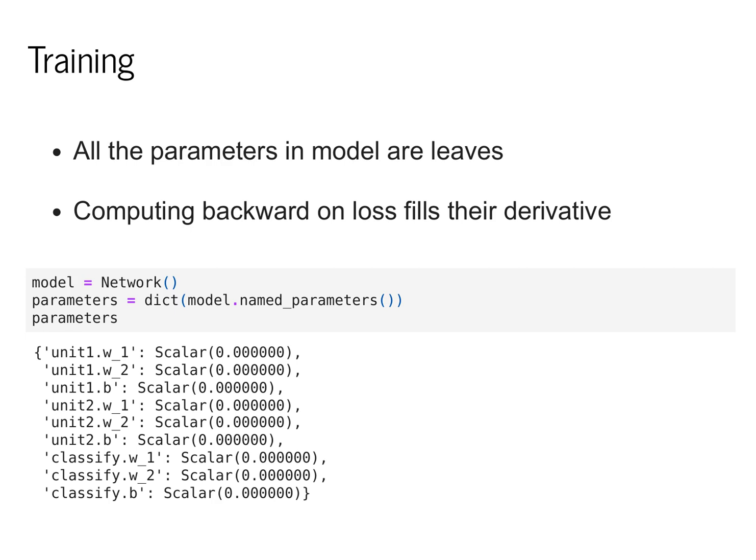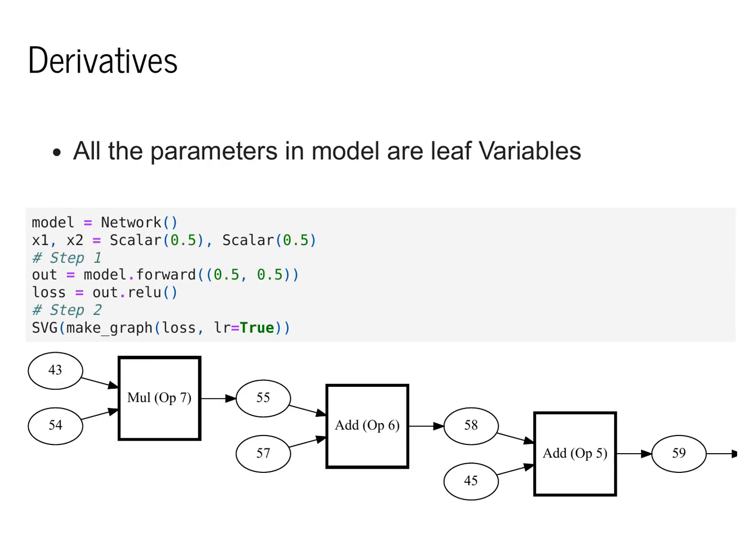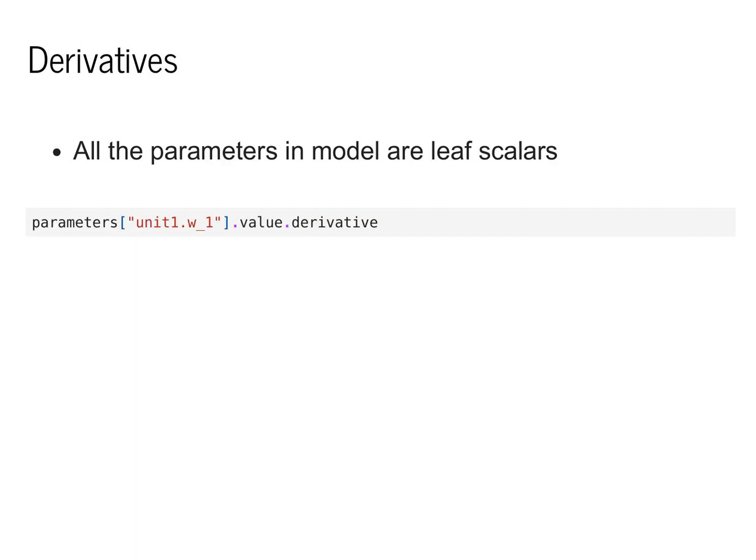We'll call this network model, and we'll look at its named parameters. We can see that we had three parameters for each of the submodules for a total of nine parameters. If we call forward on some input values and compute our loss function, this corresponds to constructing the forward graph. We can then also see that by calling this makegraph function, we can actually see the full computational graph that was constructed. If we call backward, we can then get the derivative for each of the parameters.